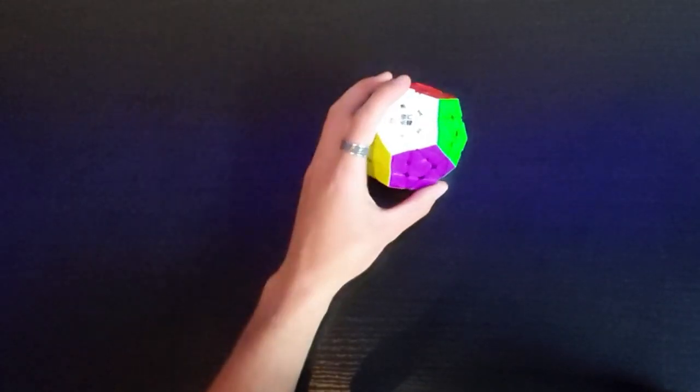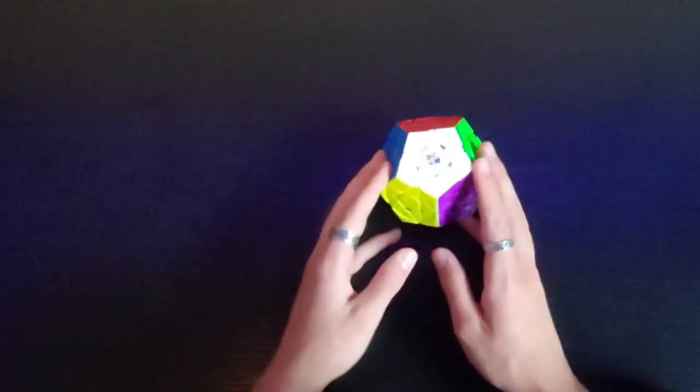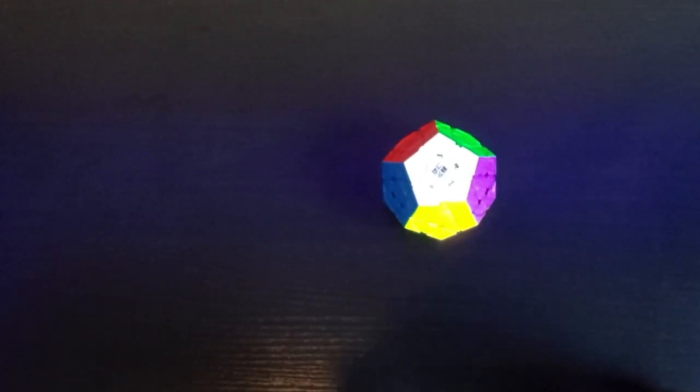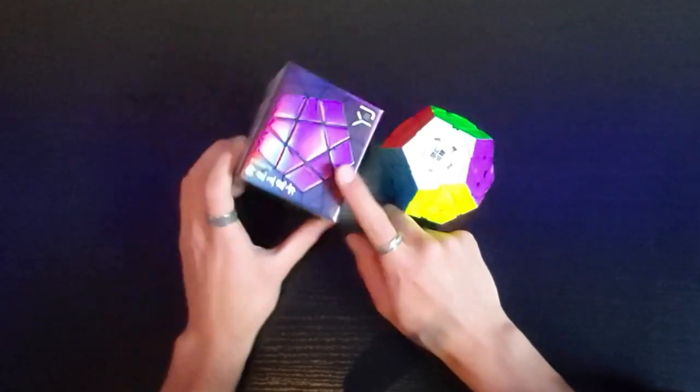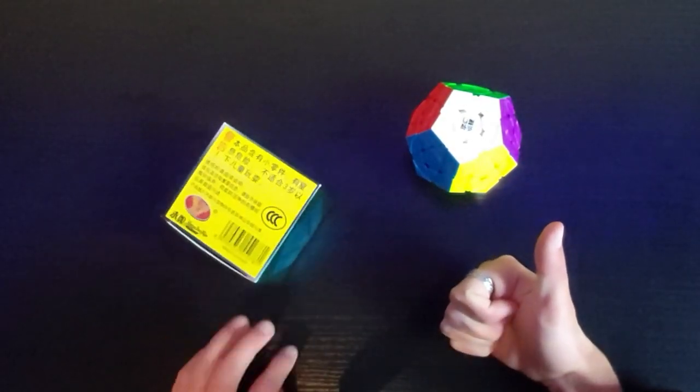There we go, guys. That was my solve on this epic cube. This is the, I don't know what it's called. One second. This is the, the YJ magnetic, yeah, cube. Subscribe.